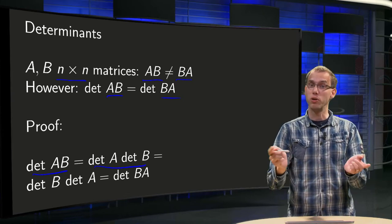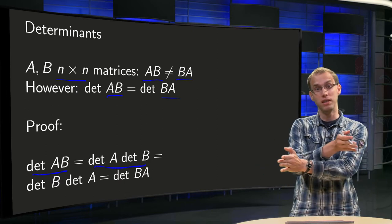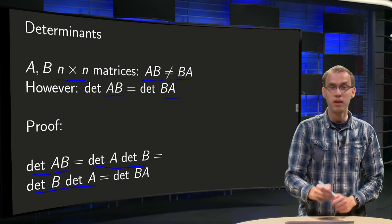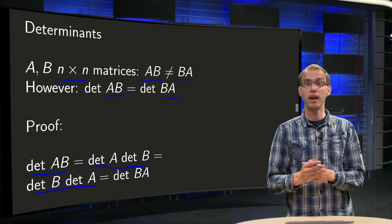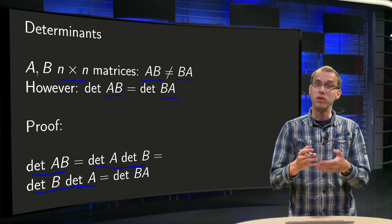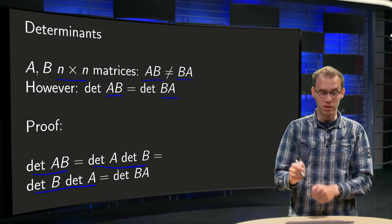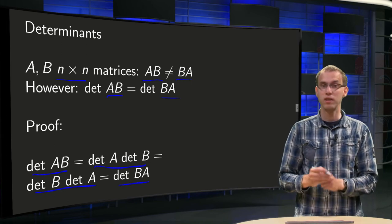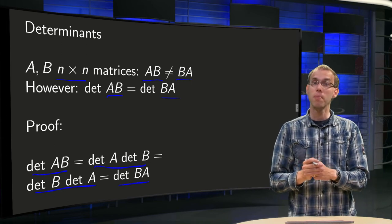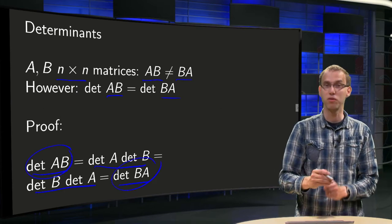Then det A and det B are just numbers, so you can invert the order there. So det A times det B equals det B times det A. And then we apply our rule again. That det AB equals det A times det B, but now with B times A, so det BA equals det B times det A. And then there we are, we have det AB equals the determinant of BA.